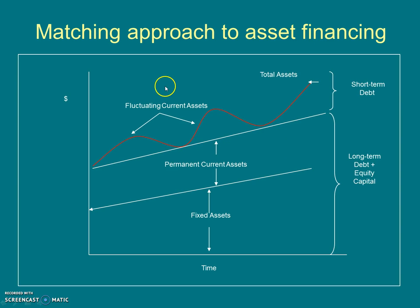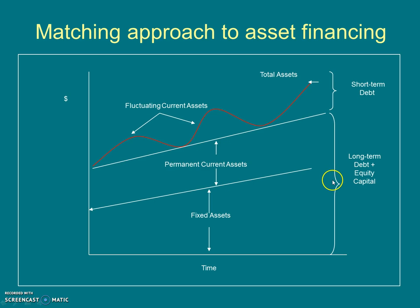The first financing approach is the matching approach. As we can see in the graph, the brackets represent the financing approach of assets. In the matching approach, fixed assets and permanent current assets should be financed through long-term debt plus equity capital, and the temporary or fluctuating assets should be financed through short-term debt.